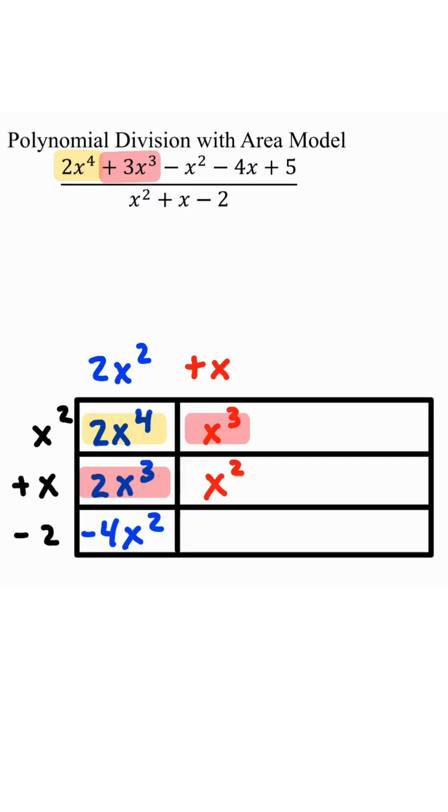x times x gives you x squared, negative 2 times x gives you negative 2x. Since we fill up the rows, section it off.